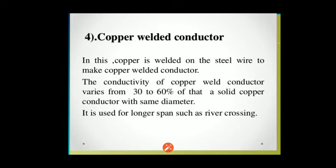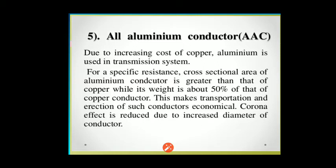Fourth, the copper welded conductor. In this type, copper is welded onto steel wires to make the copper welded conductor. The conductivity of the copper welded conductor varies from 30 to 60 percent of that of a solid copper conductor of the same diameter. It is used for longer spans such as river crossings and end-of-line applications.